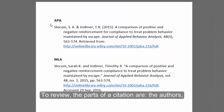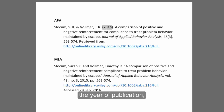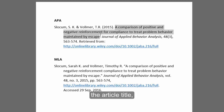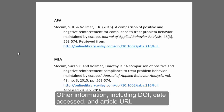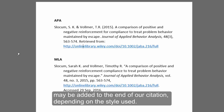To review, the parts of a citation are the authors, the year of publication, the article title, the journal title, volume and issue, and page numbers. Other information including DOI, the date you accessed the article, and the article URL may be added to the end of your citation depending on the style used.